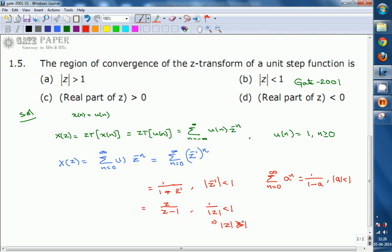Mod Z greater than 1 is nothing but the ROC, region of convergence, of the given unit step function. Then the ROC is mod Z greater than 1 for the unit step function by applying the Z-transform. The answer is option A.